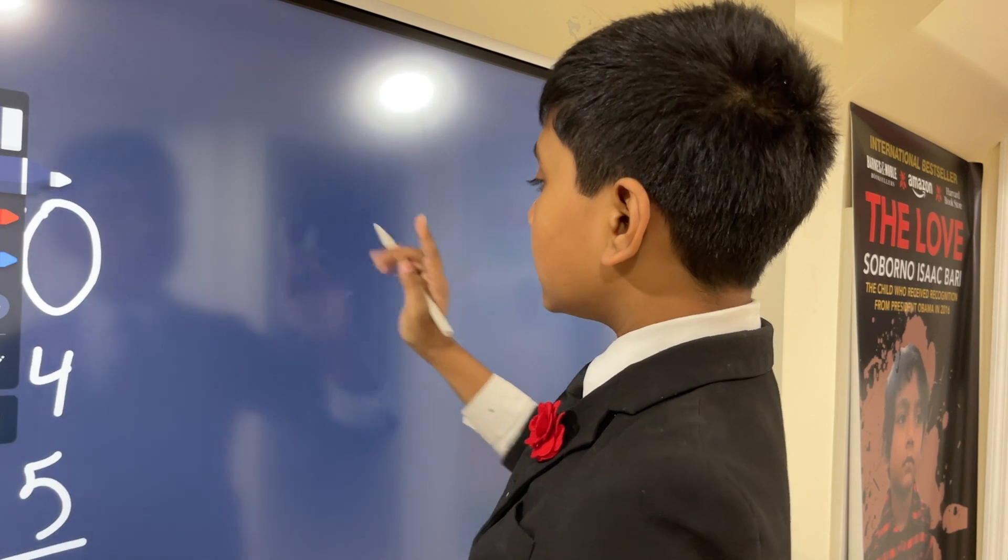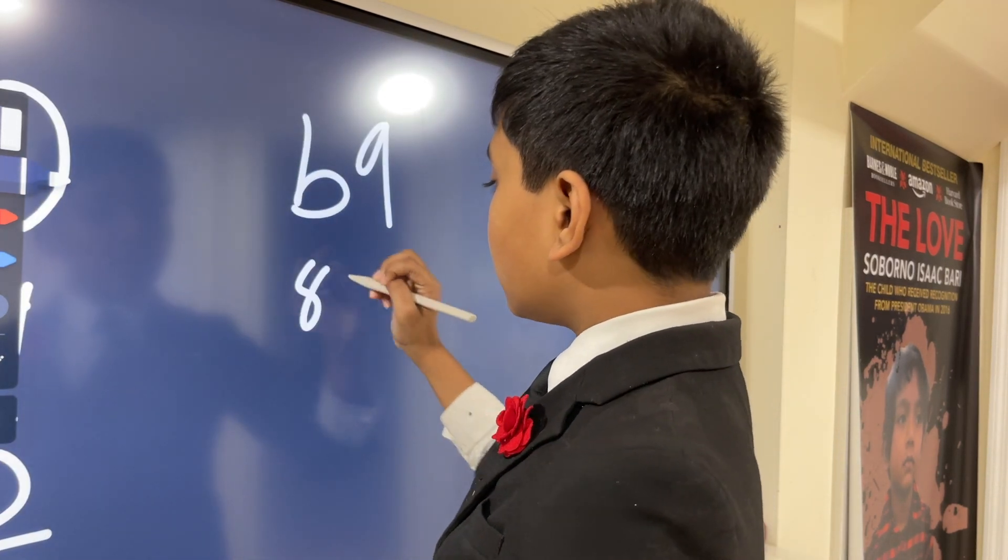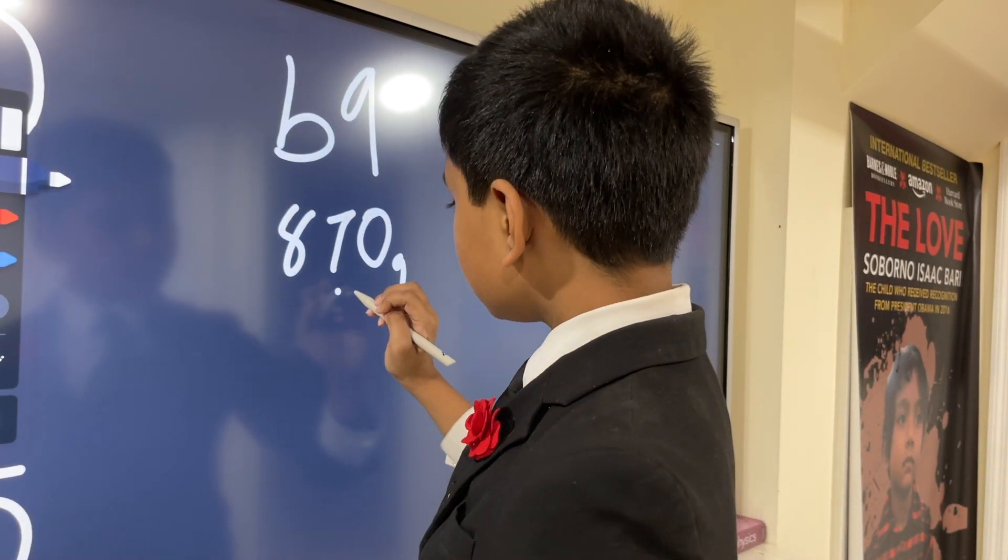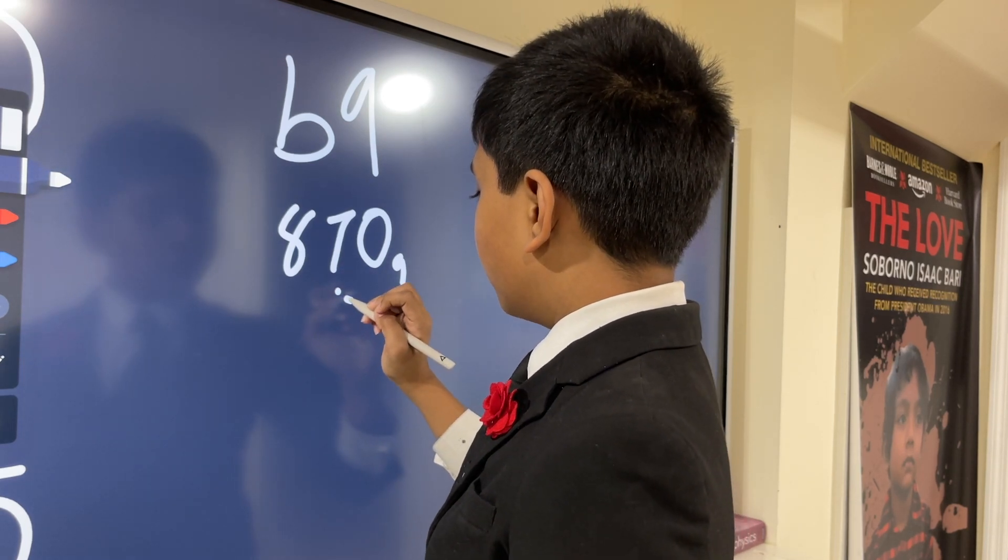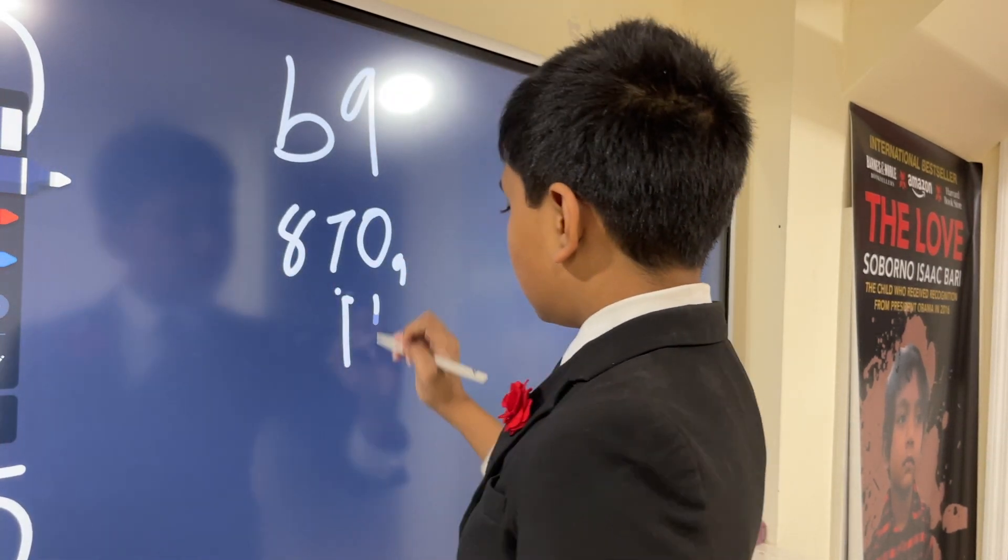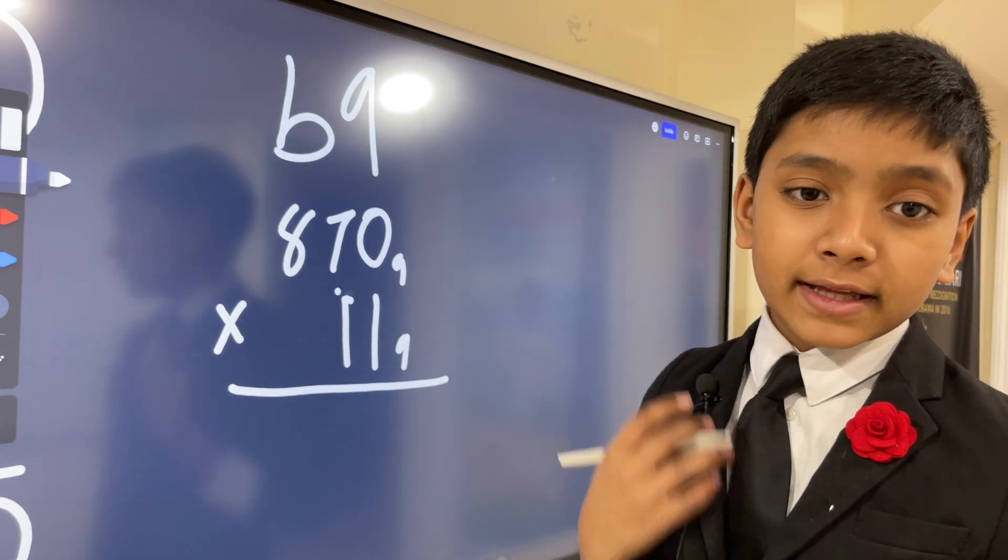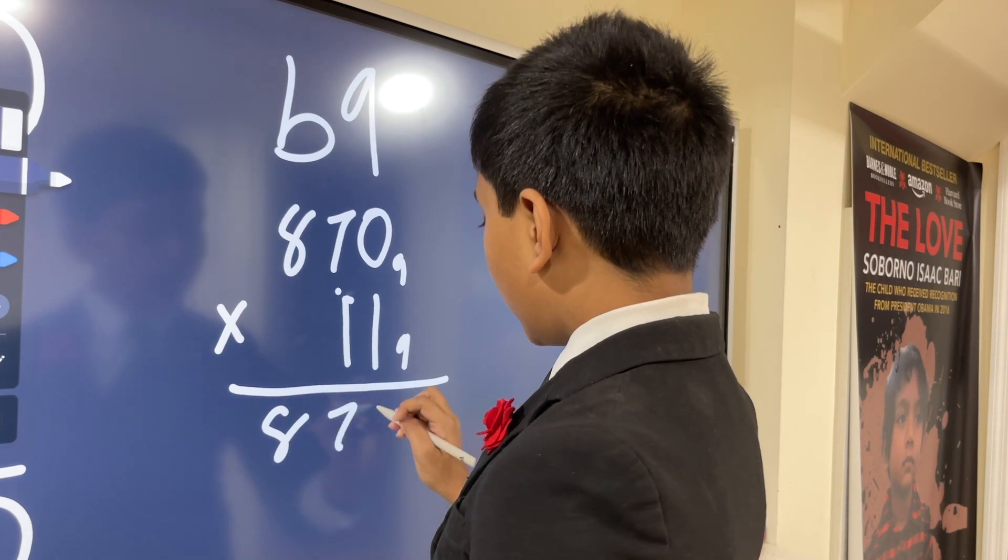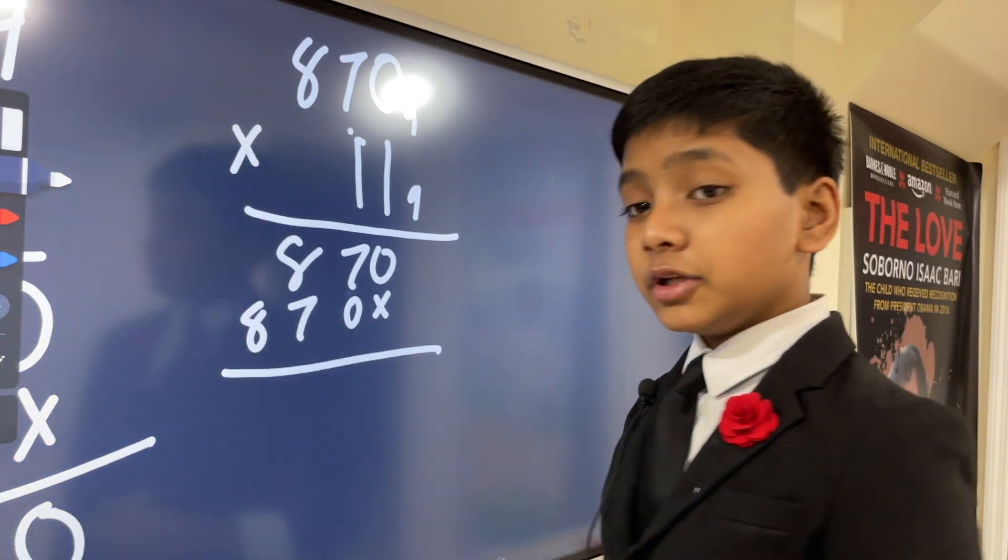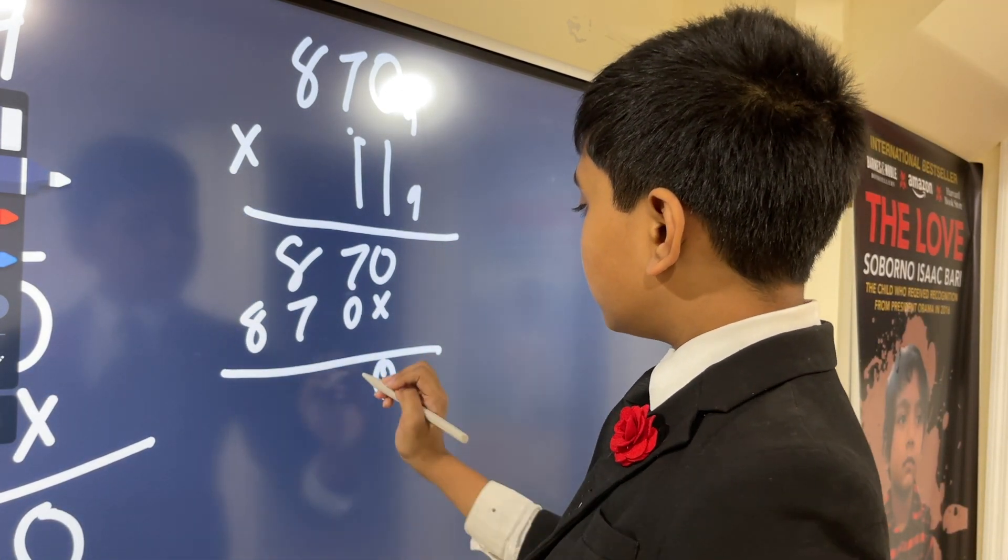Let's work our way down starting from base 9. For base 9, let's say we have 870 base 9 times 11. Since we have 11, we can just repeat 872 by writing it like this and like this. That's exactly how we do it.